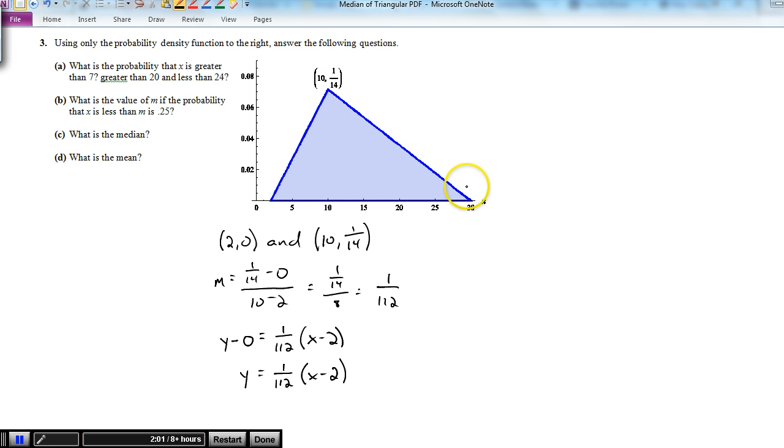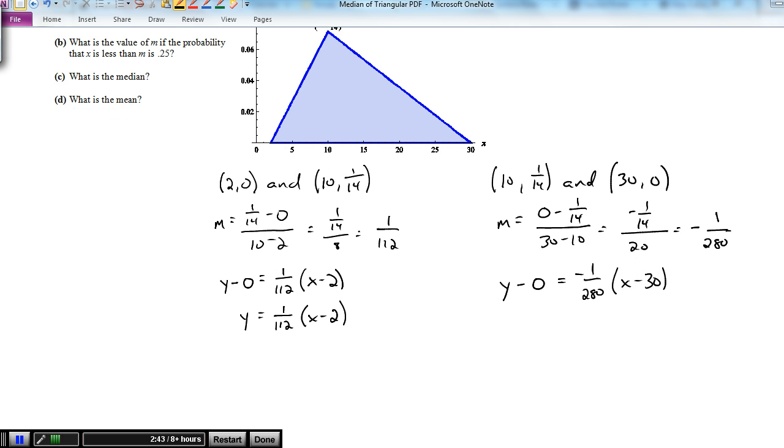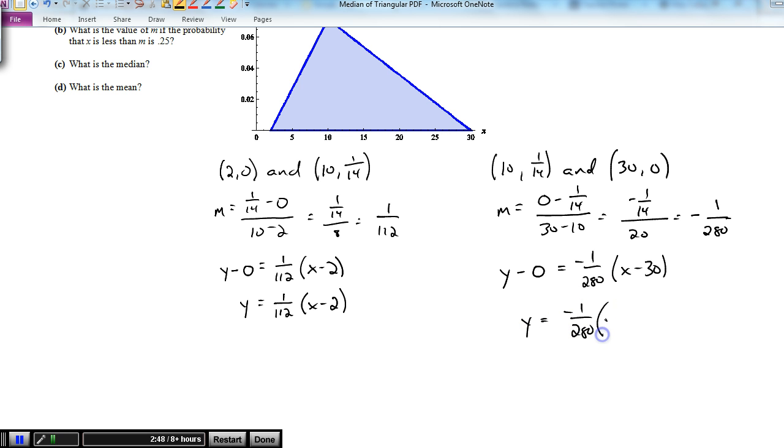The second piece over here goes through the points 10 comma 1/14th and 30 comma 0. The slope of that line is 0 minus 1/14th over 30 minus 10, which is equal to negative 1/14th over 20, which is equal to negative 1 over 280. So the equation of this line is y minus 0 equals negative 1 over 280 times x minus 30. I'm going to leave it like that because it shows me that the line negative 1 over 280x has been shifted over to the right 30 units.